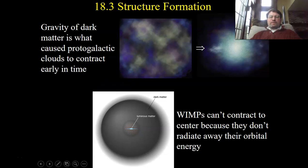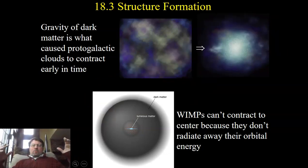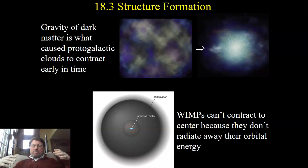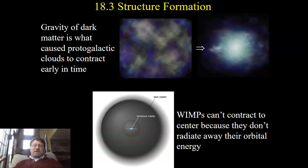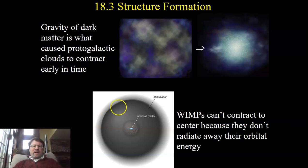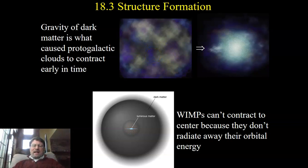Section 18.3 is on structure formation. We convinced ourselves last time — in part by looking at the cosmic microwave background radiation, and in part by looking at rotation curves of galaxies and temperatures of hot intercluster gas — that dark matter exists. It's nice that it exists because dark matter explains in our simulations how galaxies can form so quickly, within a few hundred million years after the Big Bang. Assisted by dark matter, protogalactic gas clouds contract down to form galaxies rather quickly. If you put the WIMPs — weakly interacting massive particles — in your simulation, it contracts down quickly enough. If you don't, it doesn't.